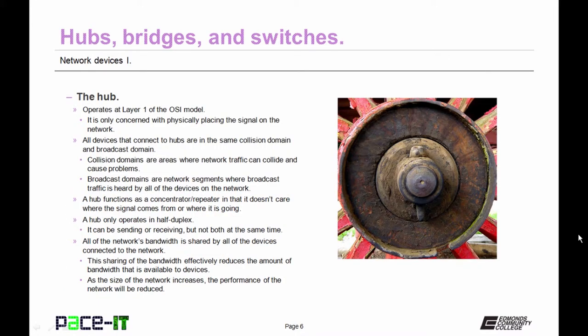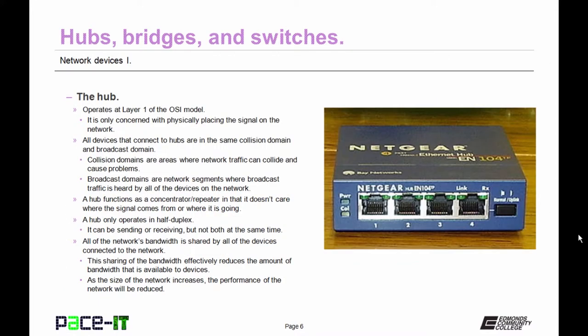Now let's move on to hubs. The hub operates at layer 1 of the OSI model. It is only concerned with physically placing the signal onto the network. All devices that connect to the hub are in the same collision and broadcast domains. Collision domains are areas where network traffic can collide and cause problems on the network. Broadcast domains are network segments where broadcast traffic is heard by all devices. A hub functions as a concentrator or repeater in that it doesn't care where the signal comes from or where it is going. When a signal comes in, the hub propagates it out all of its ports.